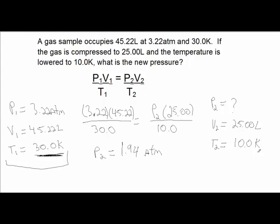And handy again, they gave you the temperature in Kelvin. Substituting all these values into this equation and solving for P₂, I end up with 1.94 atm.